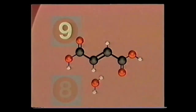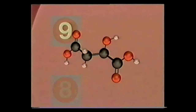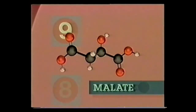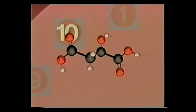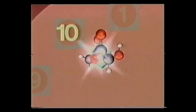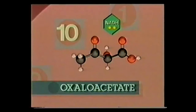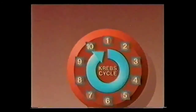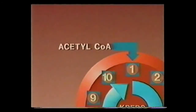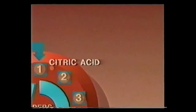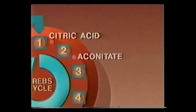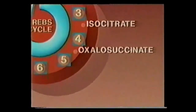Fumarate reacts with water and the product is malate. In the final reaction, malate encounters NAD⁺ and produces the last of the NADH energy carriers and regenerates oxaloacetate. The Krebs cycle began with acetyl-CoA reacting with oxaloacetate. Through a series of ten-step reactions, oxaloacetate is transformed to several different reactants and is cycled back to oxaloacetate.